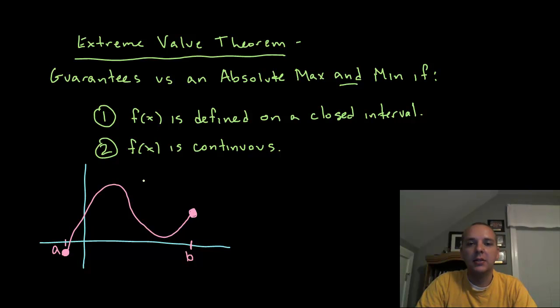Here's what it says. The extreme value theorem guarantees us an absolute max and minimum if: (1) the function is defined on a closed interval, and (2) the function is continuous. So if those two criteria are met, then there has to be an absolute maximum and minimum.